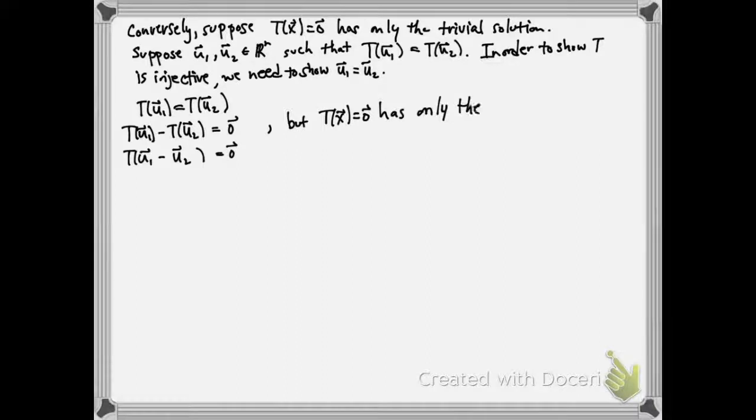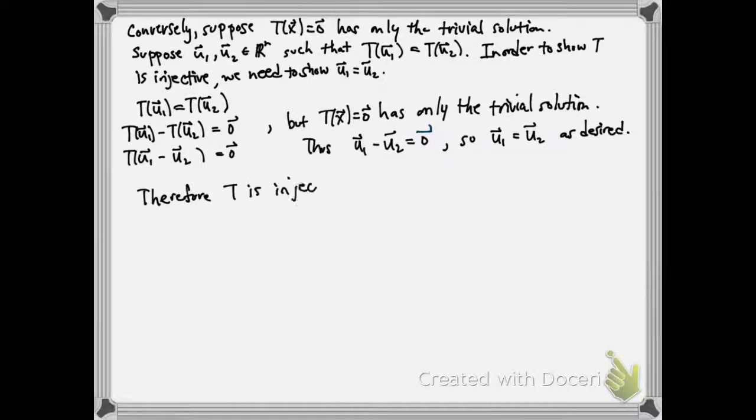But we're assuming that T of X equals zero has only the trivial solution, which means U1 minus U2 must be the zero vector. Or in other words, U1 equals U2 as desired. And therefore, T is injective if and only if T of X equals zero has only the trivial solution.